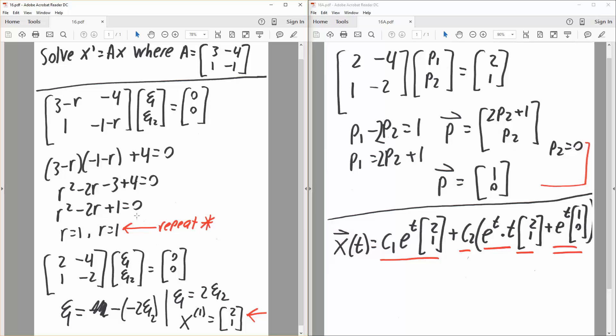And so the next thing is, we plug in 1 here, and so we would get 3 minus 1 is 2, minus 1 minus 1 is minus 2, and 1, negative 4. V1, v2 is equal to 0, 0, remains the same.